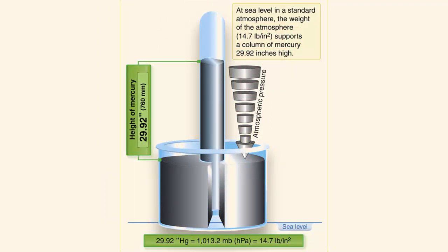Air is very light, but it has mass and is affected by gravity. Therefore, like any other substance, it has weight. And because of its weight, it has force. Since air is a fluid substance, this force is exerted equally in all directions, and the effects of this force on bodies within the air is called pressure.